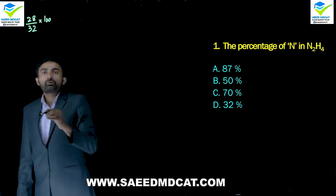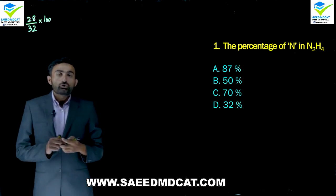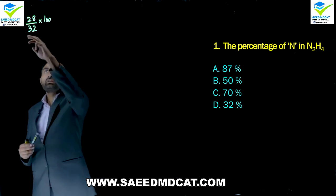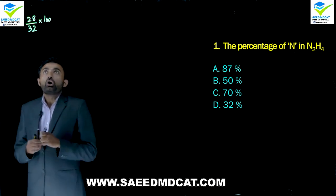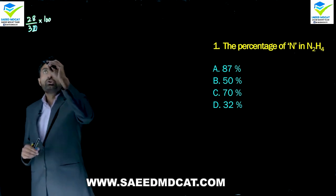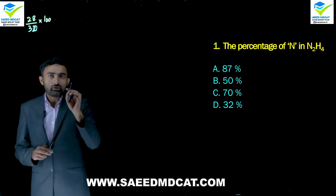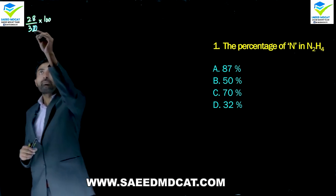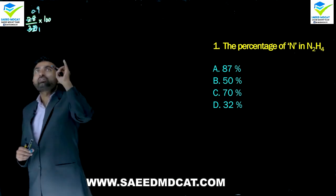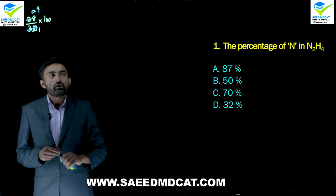Since exact calculation without a calculator is difficult, we approximate. Using approximately 30 as denominator, we get roughly 28/30 ≈ 0.93, so the value close to 0.9 would be the most correct answer. The option closest to this value is the right answer.